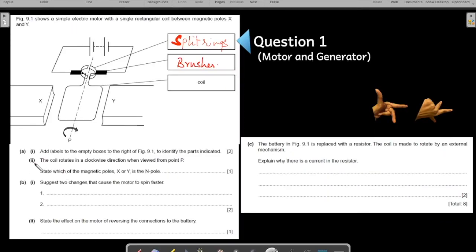Let us come to the second part. The coil rotates in a clockwise direction when viewed from the point D. State which of the magnetic poles x or y is the north pole. So before we identify, let us see how the current is moving in this electric motor.